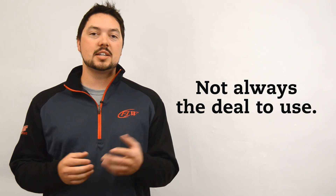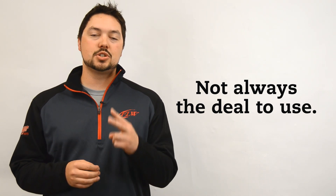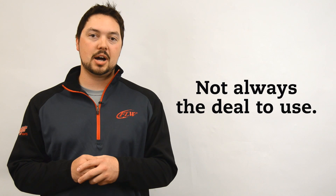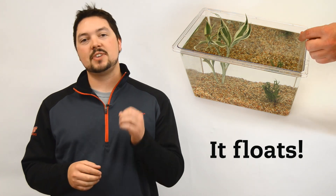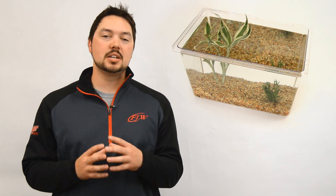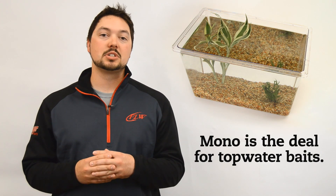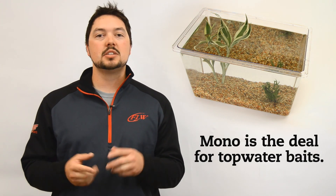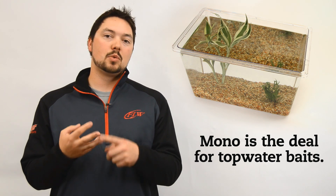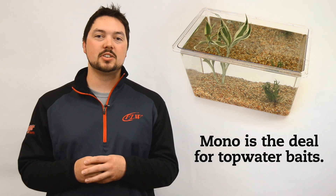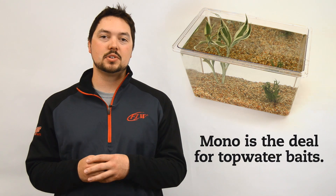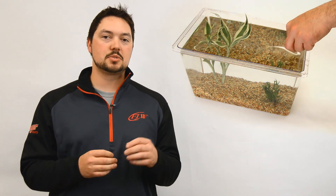For example, I have 17 rods at home and only two of them are spooled with mono. There are many characteristics of mono you need to consider when selecting this line. One of its main advantages is the fact that it floats, making it a tremendous choice for throwing topwater baits such as poppers, prop baits, and walking baits. In fact, it's one of the lines you'll see many FLW tour pros throwing when using those presentations.